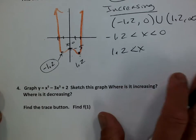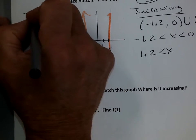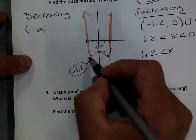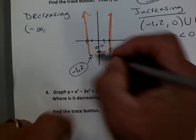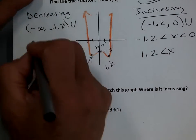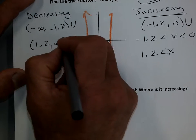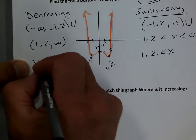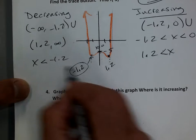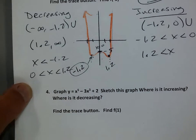Now decreasing — where is it going downhill? It's going downhill from negative infinity down to negative 1.2. It's also going downhill from 0 to 1.2. In set notation: x is less than negative 1.2, and also 0 less than x less than 1.2.